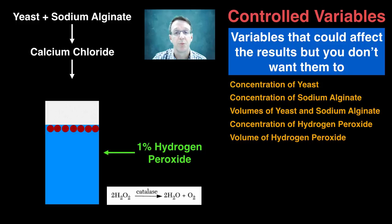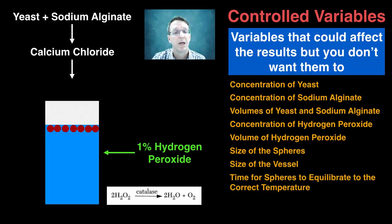The volume of the hydrogen peroxide needs to be kept the same, since you're measuring how fast the spheres rise in a particular volume. The size of the spheres need to be as consistent as you can make them. The size of the vessel needs to be the same. And even the time for the spheres to equilibrate to a particular temperature needs to be in place before you start. So these are just some of the examples that you might think about in this particular experiment.